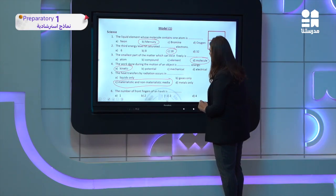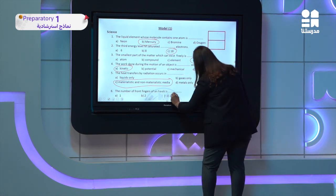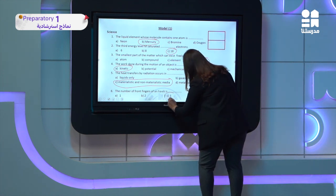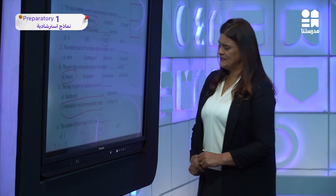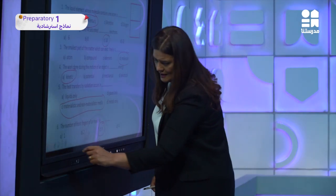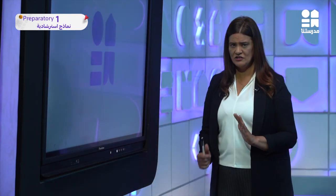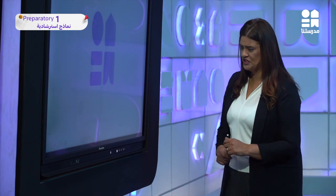The number of front fingers of a hawk is anterior or superior — one or three. We have six questions in multiple choice format and it is very easy as shown here.